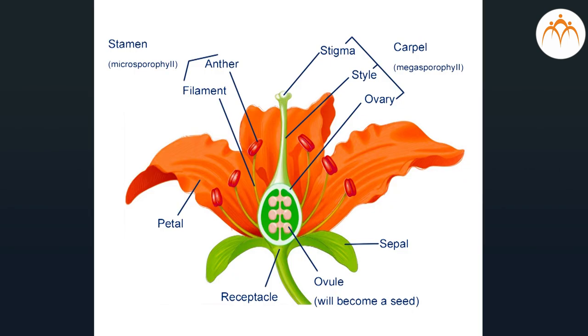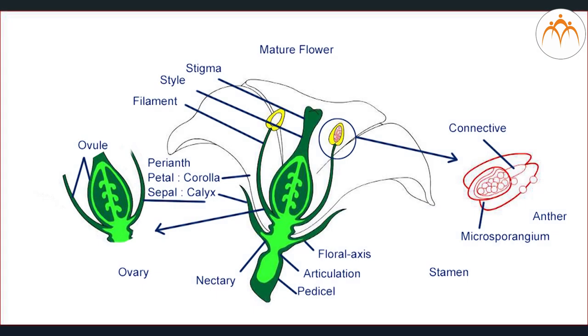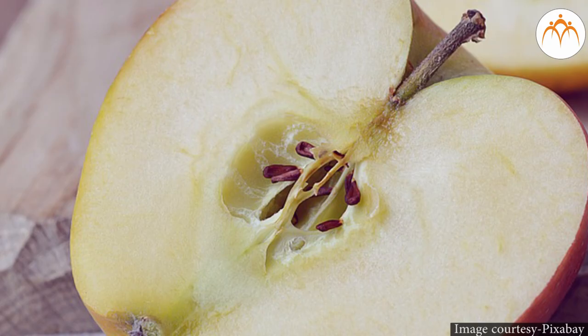Summary. Flowers are produced for reproduction. Parts of flower are pedicel, calyx, corolla, androsium and gynosium. Fruits and seeds develop from flowers.